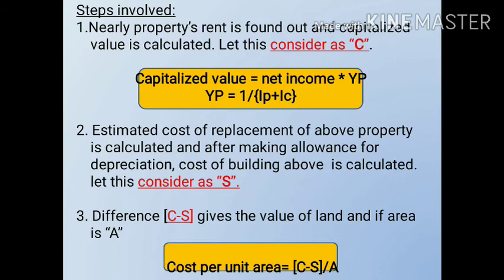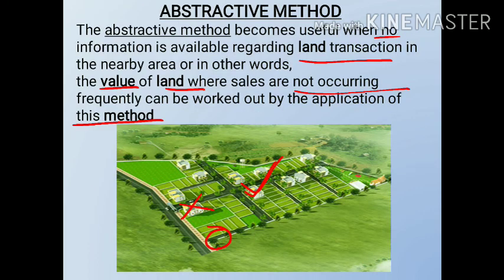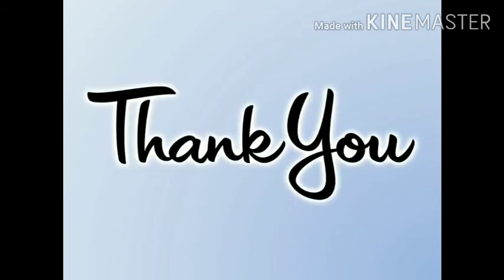So when we calculate C minus S — that means capitalized value minus S, where S is the building value — we are left with the land value. You can use that land value for your comparison or reference. This is all about the abstractive method. We have seen how to calculate the land value. If you like my videos, please do subscribe to my channel and share. Thank you.